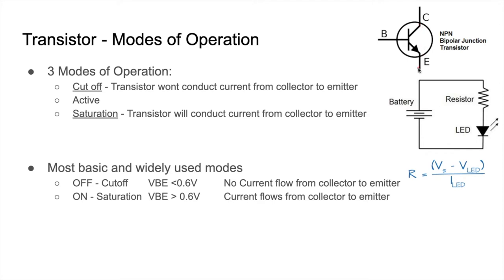If we consider this transistor as a switch, a normal switch consists of two pins — connected or disconnected. But the transistor has three pins. It doesn't work as a physical switch; instead it's a switch controlled using a third pin through current and voltage variations. That third pin is the base B, while C is the collector and E is the emitter.